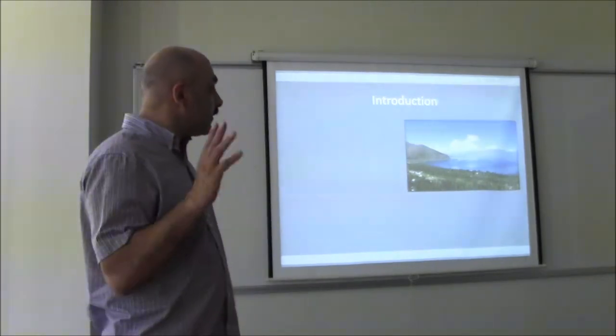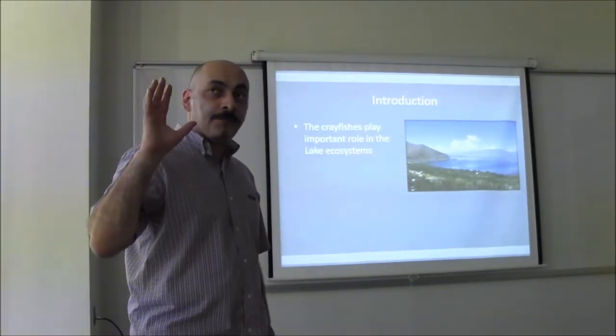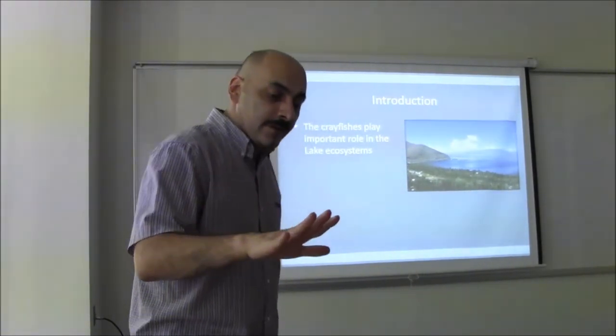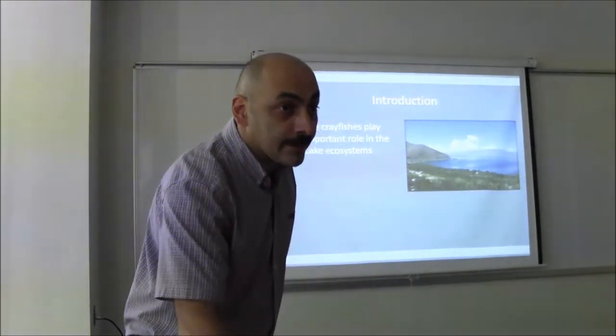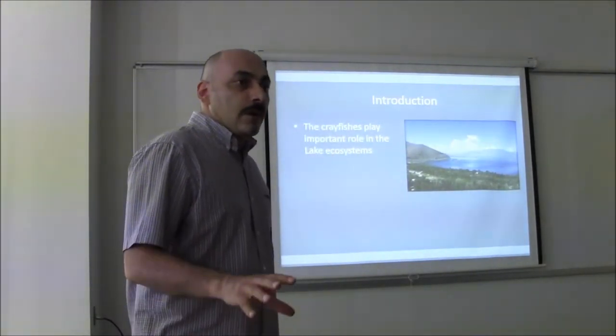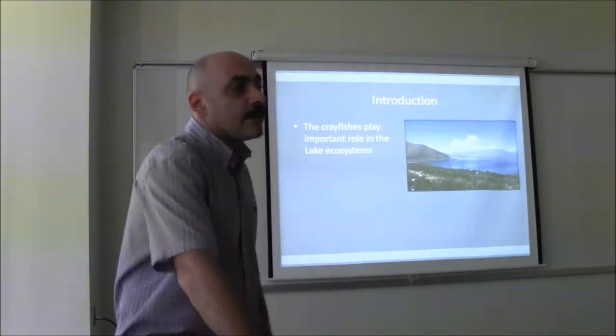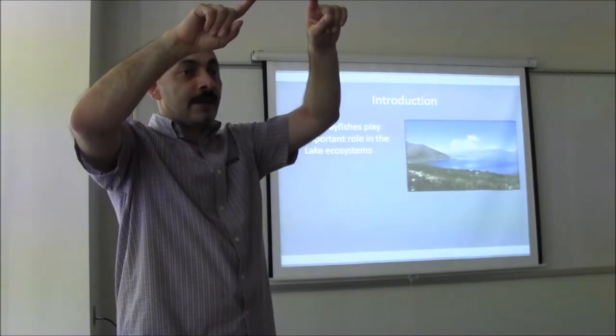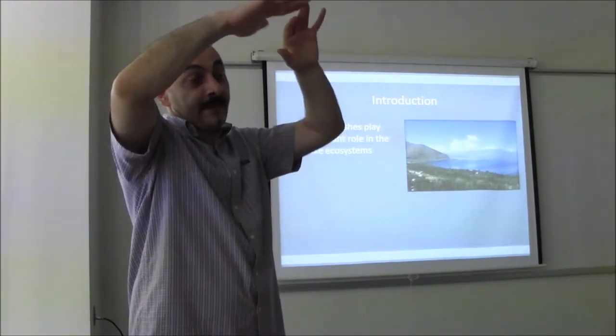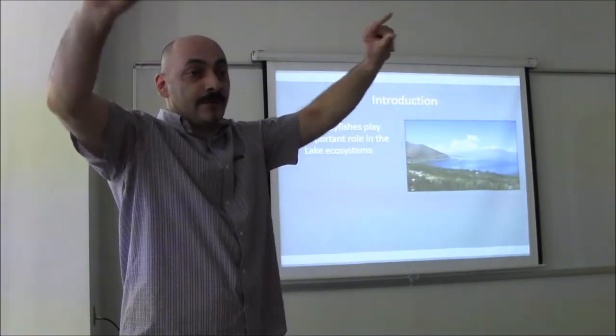In the same time, crayfishes are playing a very important role in lake ecosystems because they are sort of everything eaters. And they consume the detritus, the organic matter widely. Organic matter that is at the bottom of the lakes. So that means that they prevent decay of detritus and then prevent movement of phosphorus and nitrogen to the top layer of the lake where they can be eaten by phytoplankton and can cause growth of phytoplankton in the upper layer.